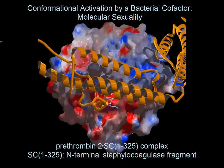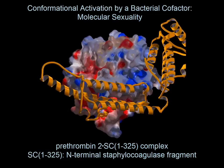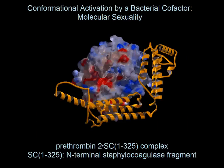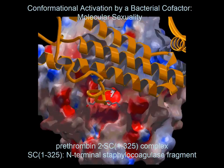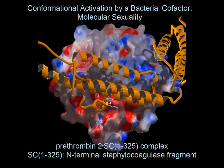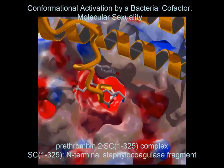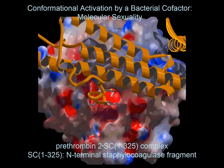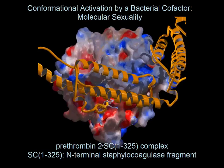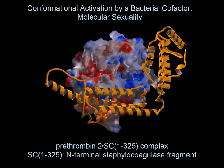This was the origin of the molecular sexuality hypothesis. There is no crystallographic proof for SK activating plasminogen, but there is for prethrombin II and staphylocoagulase fragment. Nonetheless, solution studies by Liz Headstrom and Guy Reed showed clearly ample proof for the molecular sexuality mechanism in both cases. We collaborated with Wolfram Boda's lab in solving the structure of the SC-1 to 325 fragment bound to prethrombin II — the SC is shown in gold, zooming in on the binding pocket.